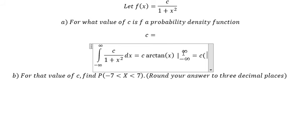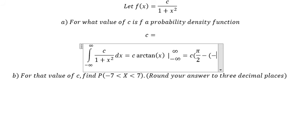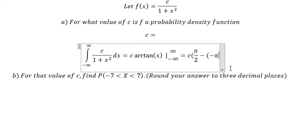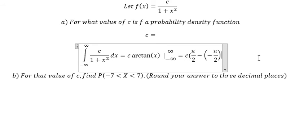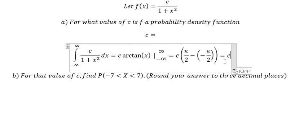When x approaches positive infinity, we will have about π over 2. When x approaches negative infinity, we will have about negative π over 2, because we have the denominator here — that's why we need the negative side. We simplify and we get cπ.